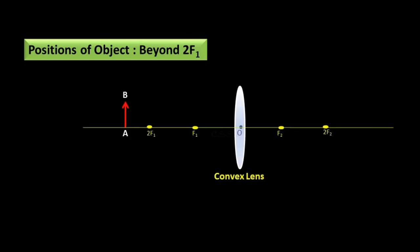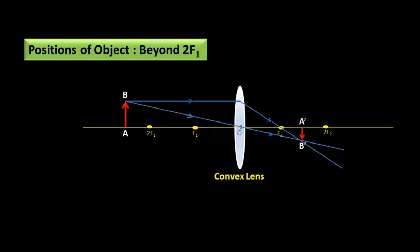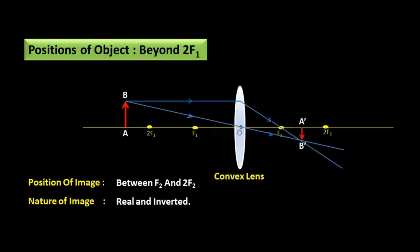Second position — object beyond 2F1. AB is the object. The first incident ray is parallel to the principal axis and passes through the focus F2. The second incident ray comes from object AB and passes through the optical center without any deviation. These two refracted rays cross each other at a single point — this is the position of image A'B'. Position of image: between F2 and 2F2. Nature of image: real and inverted. Size of image: smaller than object.